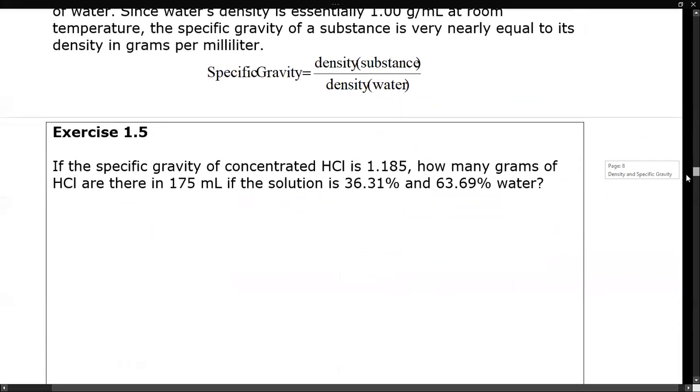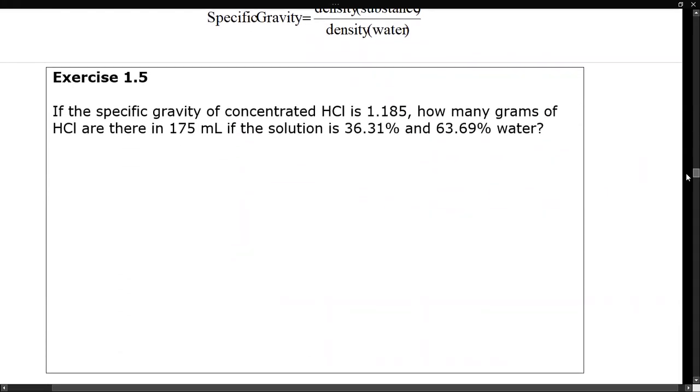Then if we look at this next example, it says if the specific gravity of concentrated HCl is 1.185, notice no units. How many grams of HCl are there in 175 milliliter solution if the solution is 36.31% HCl and the remainder water?